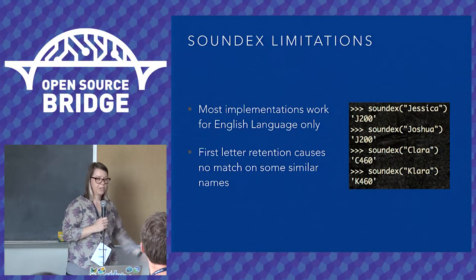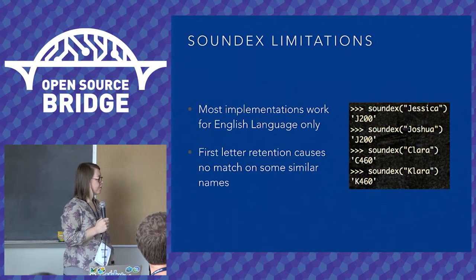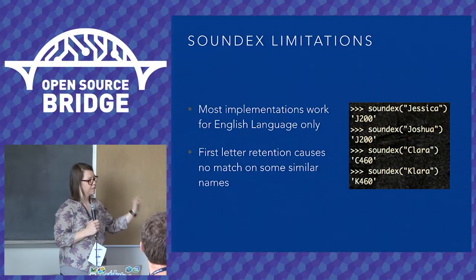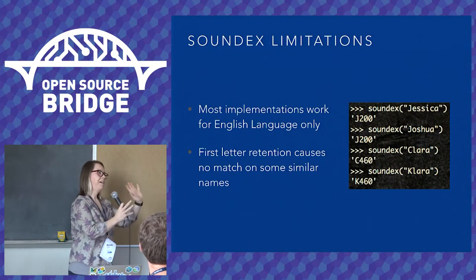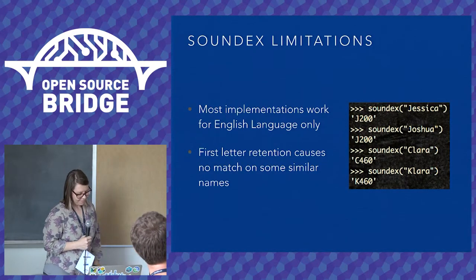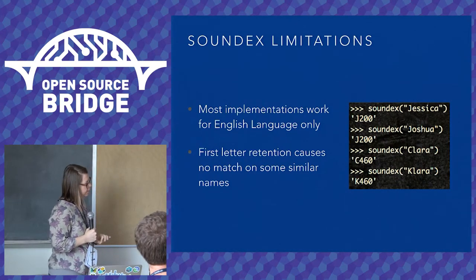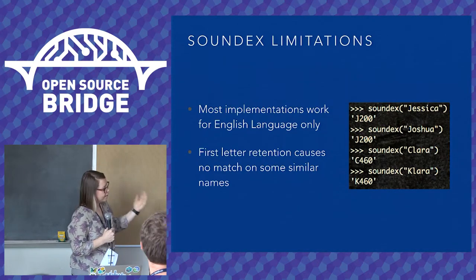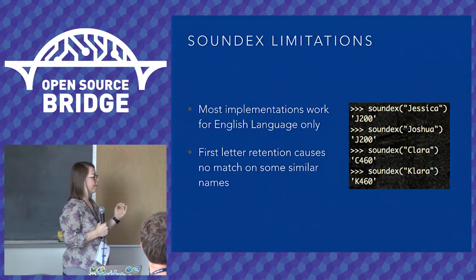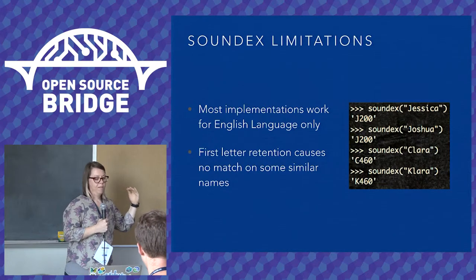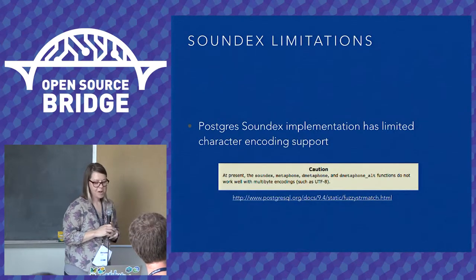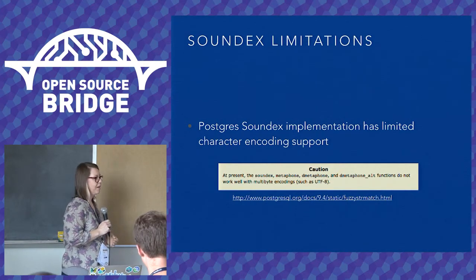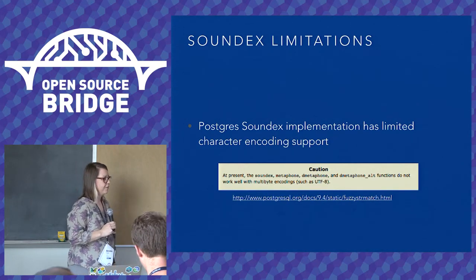So what are some limitations of Soundex? It was developed for English, so most implementations only work for English — probably not going to work for dialects of Chinese, though there is an Indian implementation. Soundex treats the first letter as absolute, meaning anybody with a C or K beginning name is treated as two different names. But functionally, Clara and Klara sound exactly the same, so matching based on name similarities with C's and K's wouldn't work well. Also, Postgres Soundex has limited character encoding support — if you have Unicode or UTF-8 characters that are not ASCII, that's going to wreak havoc on your database.